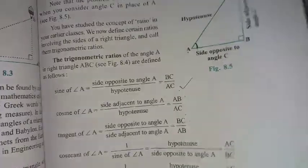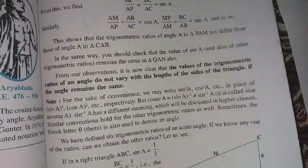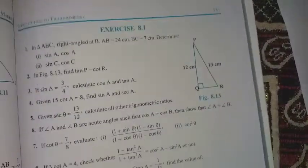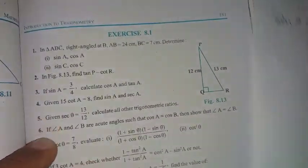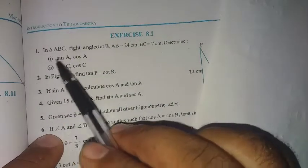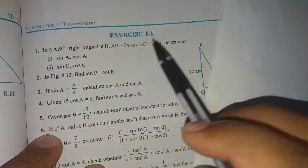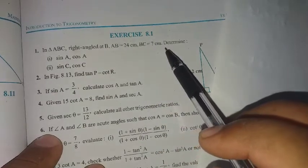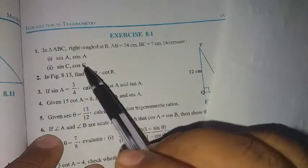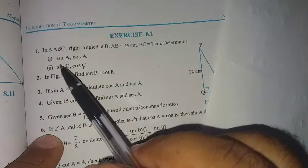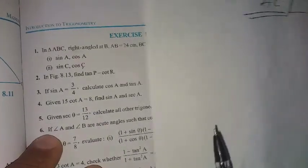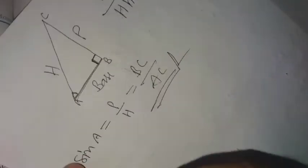Let's solve the questions from the exercise. We have Exercise number 8.1 here. First question is: in right triangle ABC, right angled at B, AB equals 24 centimeter and BC equals 7 centimeter. Determine sine A, cos A, sine C, cos C.